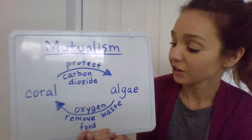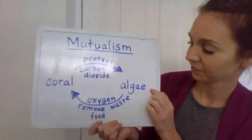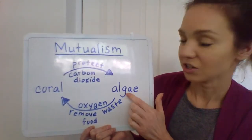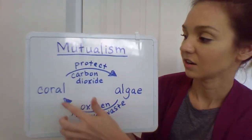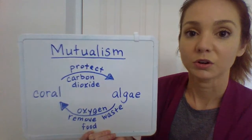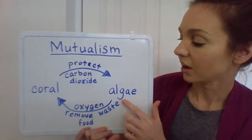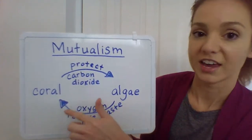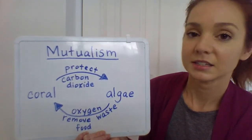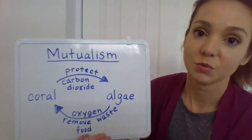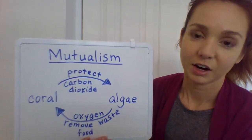But in return, the coral is getting a few things from algae as well. The algae, as a process of photosynthesis, releases oxygen, which goes back to the coral — and the coral needs it. The algae also helps the coral remove waste. So after the coral has eaten and it's getting rid of things it doesn't need anymore, the algae helps take care of that, kind of like a garbage disposal.